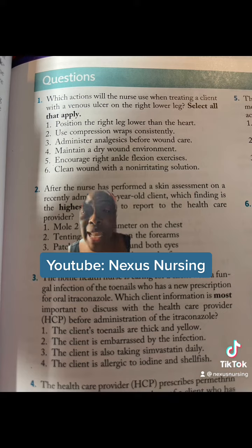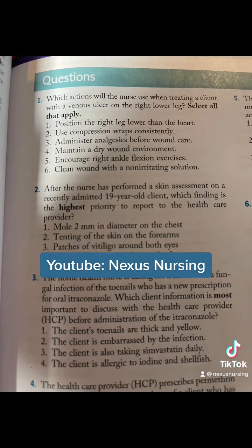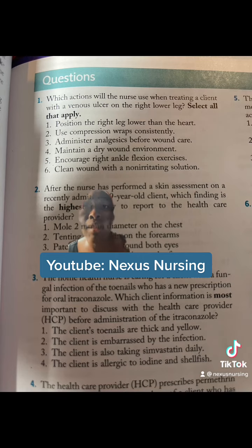Four: maintain a dry wound environment. False. We actually want that wound to be moist because that moistness helps with wound healing. Five: encourage right ankle flexion exercises. Absolutely. Exercises of that extremity also help with venous return.